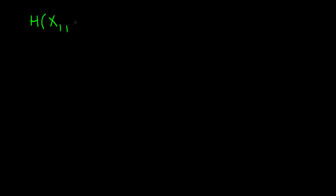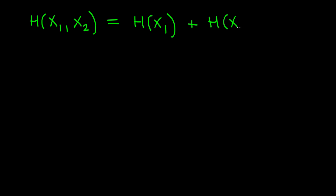Why do we choose this particular mathematical form for entropy? Consider two independent random processes X1 and X2, where the outcome of one tells you nothing about the other. We would hope that the overall informational content equals the information from the first process plus the information from the second — in other words, entropy should be additive. This additivity only holds for the independent case; with dependence, knowing X1 tells you something about X2 and it's not simply additive.